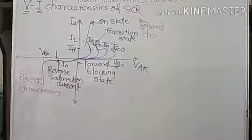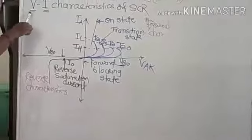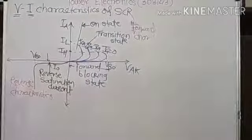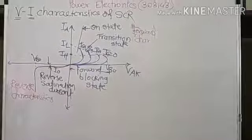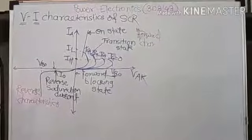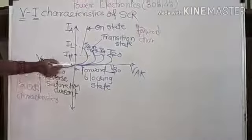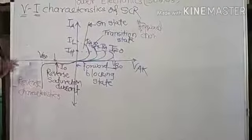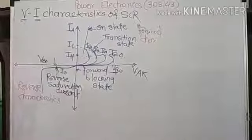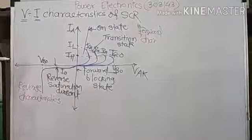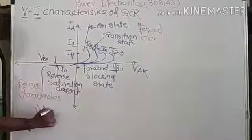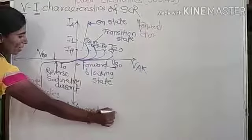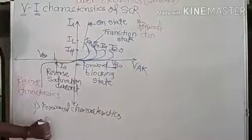Now I will explain these characteristics again. This is called VI characteristics because it is a graph of voltage versus current. The voltage is between anode to cathode, named VAK. The current flowing through the SCR is the anode current flowing from anode to cathode. These characteristics are divided into two parts: forward characteristics and reverse characteristics.